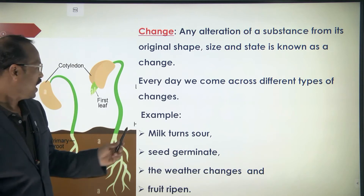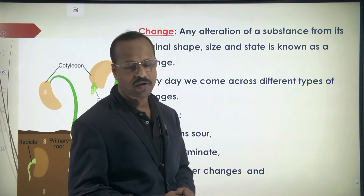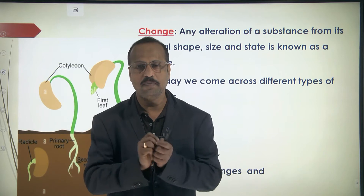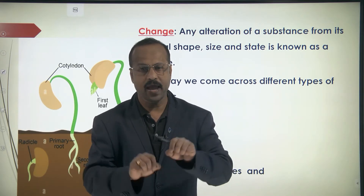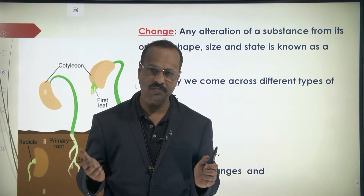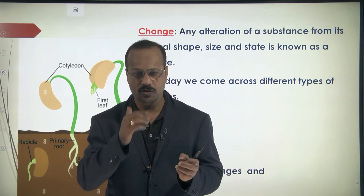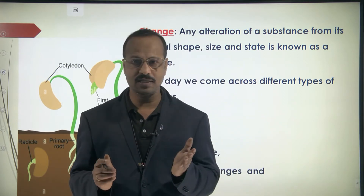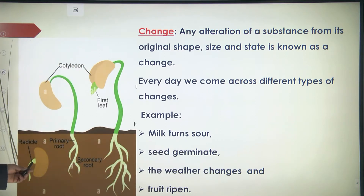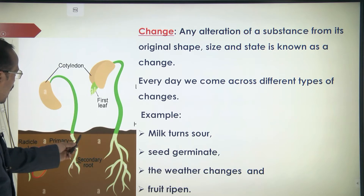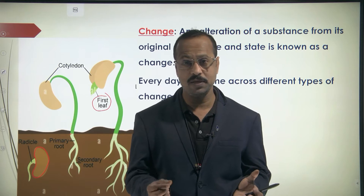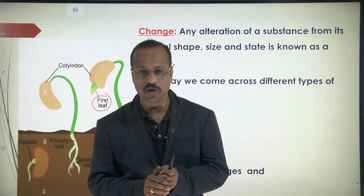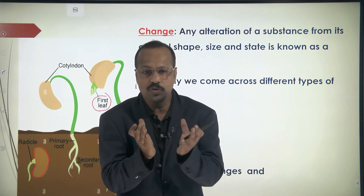Every day we come across different types of changes. For example, milk: if you take a milk packet and don't put it in the refrigerator, don't boil it, and just leave it in a vessel, by the afternoon or evening it will become sour — a change has taken place. Another example is seed germination: a seed kept inside soil germinates, gives its first leaf, and from that small seed a small plant rises.